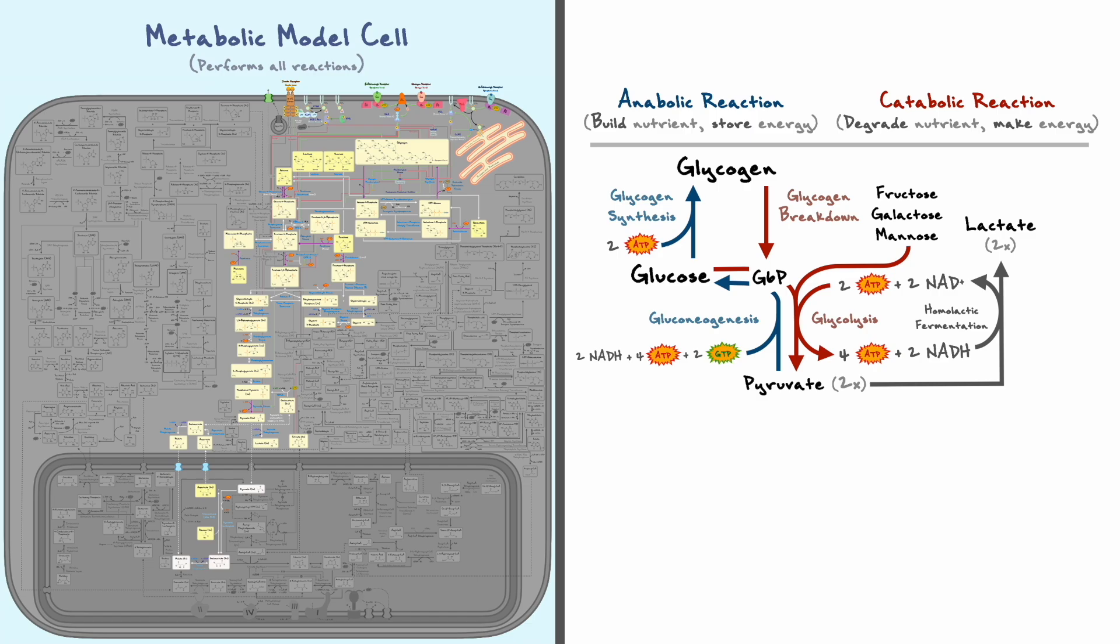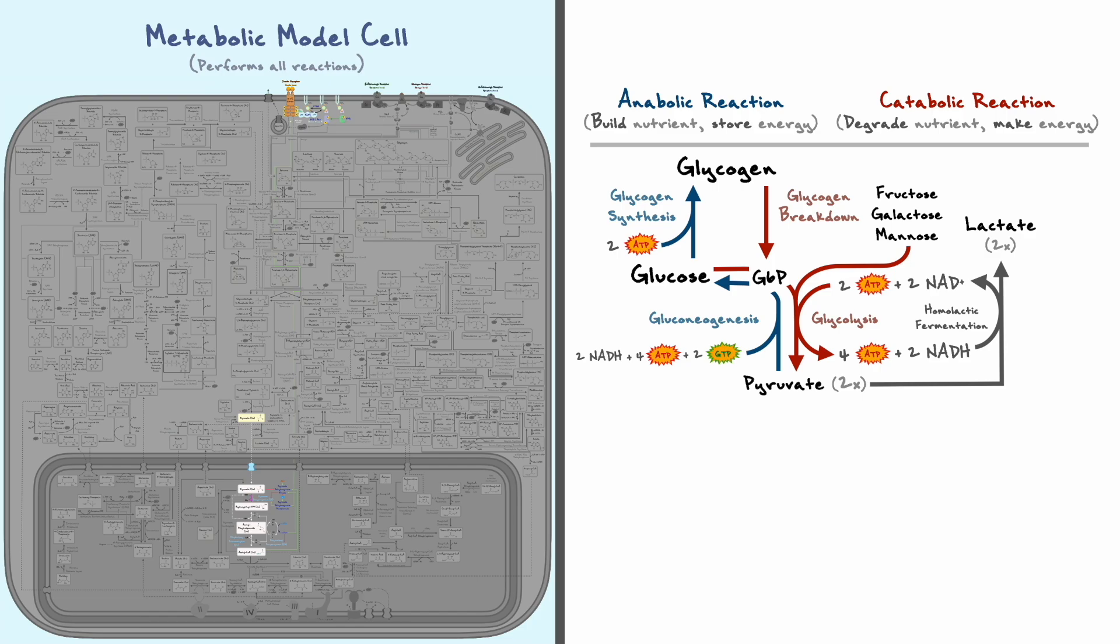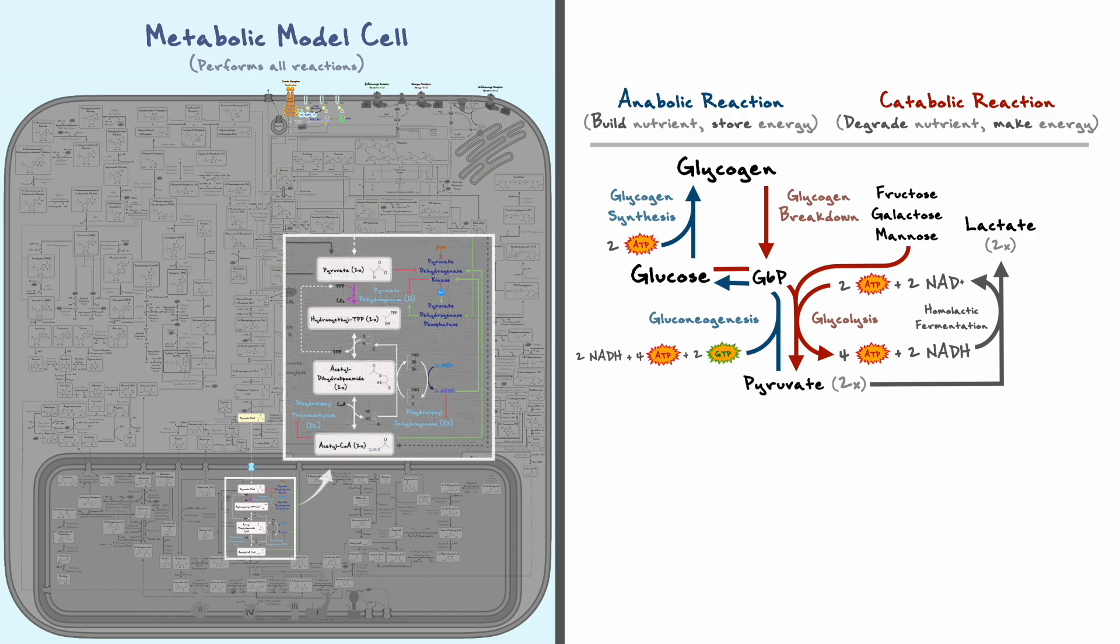For the moment, all the reactions that we have covered occurred in the cytosol. With respect to glucose, the entry point in the mitochondrion begins with pyruvate, which can be imported into the organelle by a specific transporter. Inside the mitochondrion, the two molecules of pyruvate get converted to two molecules of acetyl-CoA, and this produces one CO2 and one NADH per pyruvate, so from the perspective of glucose, two CO2 and two NADH.